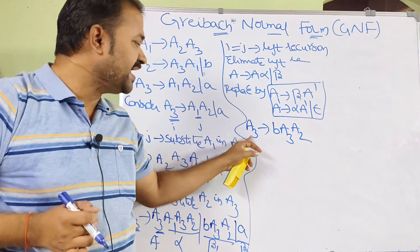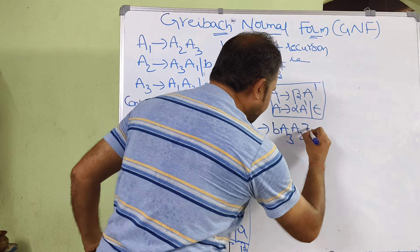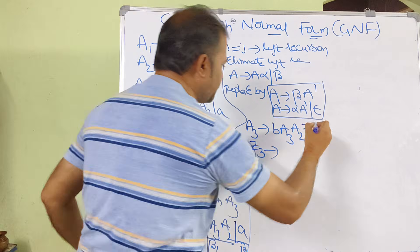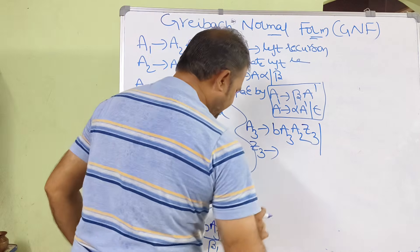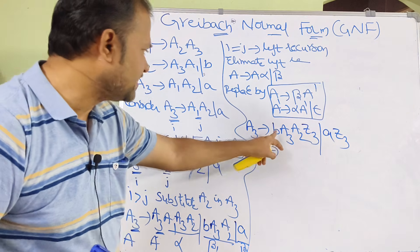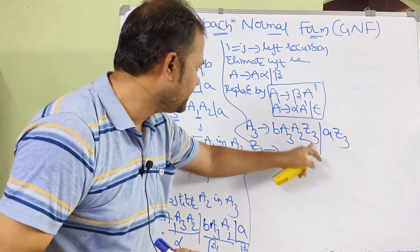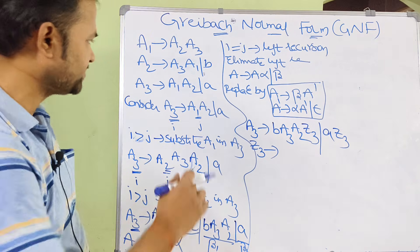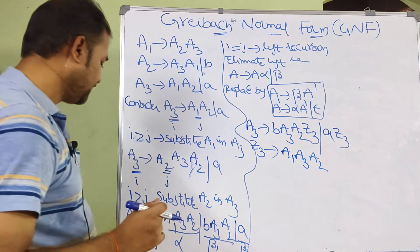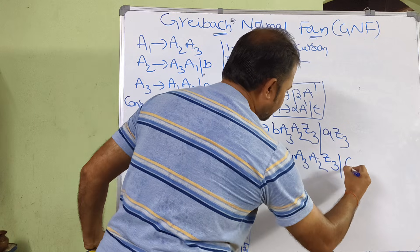Z3 implies alpha A-dash or epsilon, so Z3 produces A1, A3, A2, Z3 or epsilon. This production contains epsilon, so now we have to eliminate Z3 implies epsilon. To eliminate it, in place of Z3 we substitute epsilon. So A3 produces B, A3, A2, Z3 or A, Z3. Substituting epsilon for Z3 gives B, A3, A2 or A.